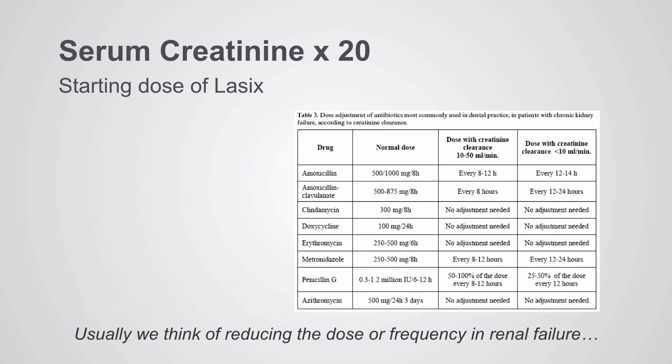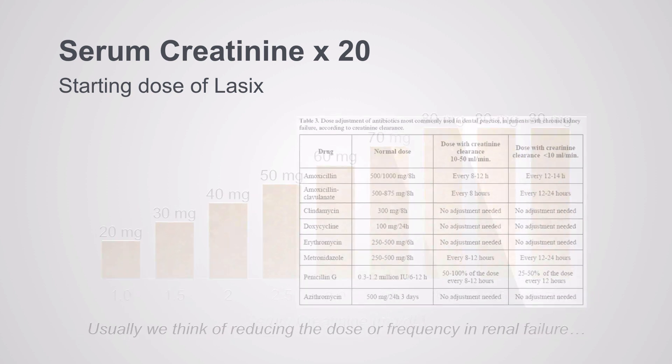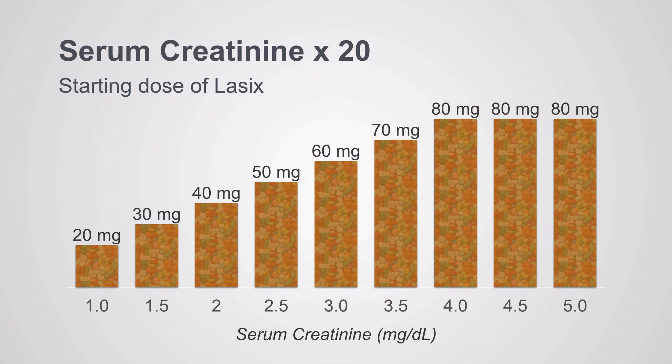When talking about renal dosing, we usually discuss decreasing the dose as kidney function deteriorates. That's not the case with diuretics — here we use more and more of the drug as the kidneys get weaker and weaker. For furosemide starting dose, I like to take the serum creatinine in milligrams per deciliter and multiply it by 20, with a ceiling of around 80 milligrams. Once at 80 milligrams, give a test dose and see what kind of response. If no response, you can go even higher.